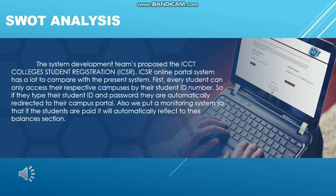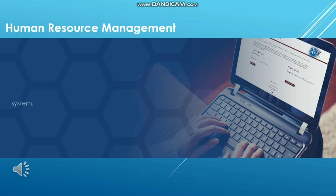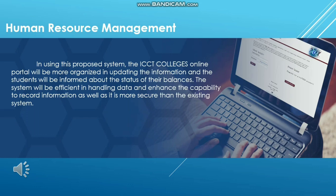SWOT Analysis. The system development team proposes that the ICCT Colleges Student Registration, or ICSR online portal, has many improvements compared to the present system. Every student can only access their respective campus by their student ID number, so when they type their student ID and password, they are automatically redirected to their campus portal. A monitoring system is also included so that when students make a payment, it will automatically reflect in their balances section. In using this proposed system, the portal will be more organized when updating information. Students will be informed about the status of their balances. The system will be efficient in handling data and will enhance the capability to record information, and it is more secure than the existing system.